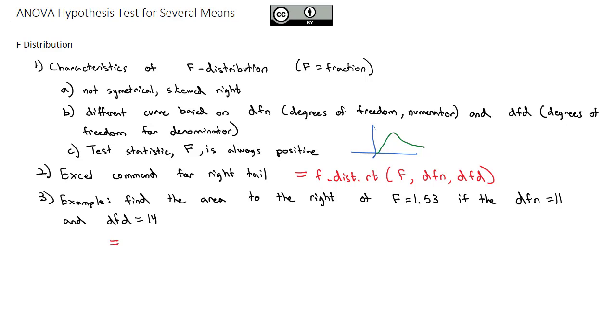In Excel, we could say equals F dot dist dot RT for right tail. The test statistic is 1.53. The degrees of freedom for the numerator is 11 and the degrees of freedom for the denominator is 14. And if you do that on Excel, you should get 0.2242. So that's our introduction to the F distribution. It's what we're going to do to conduct our ANOVA hypothesis test.